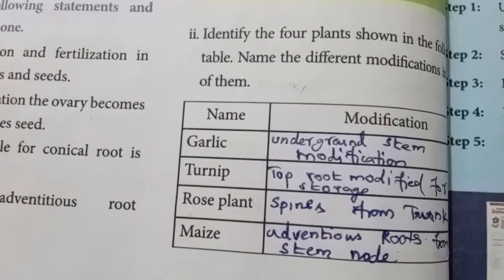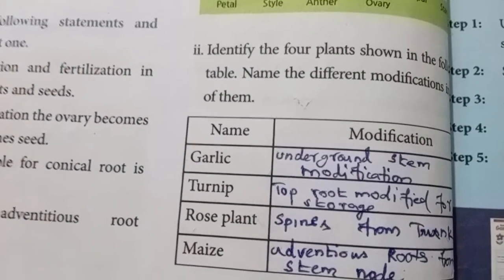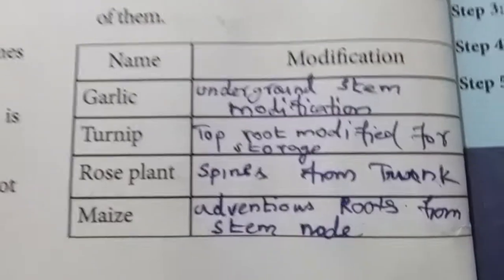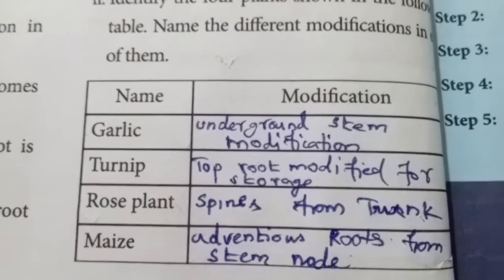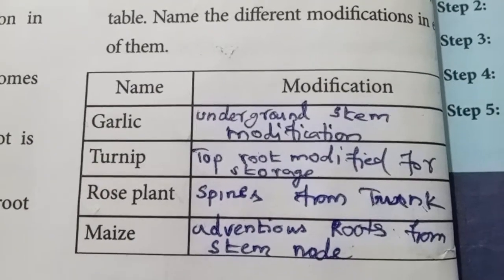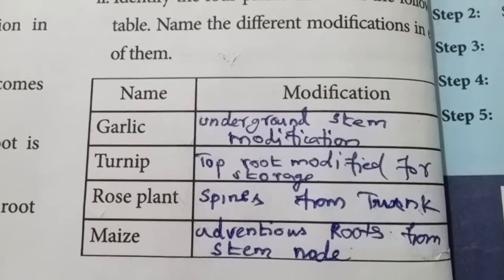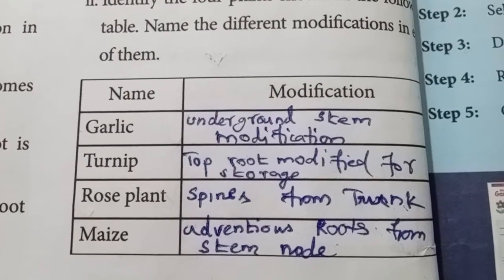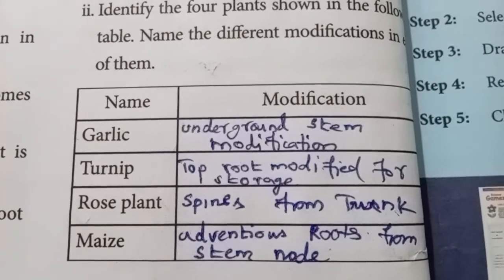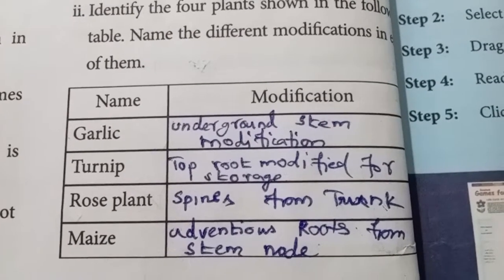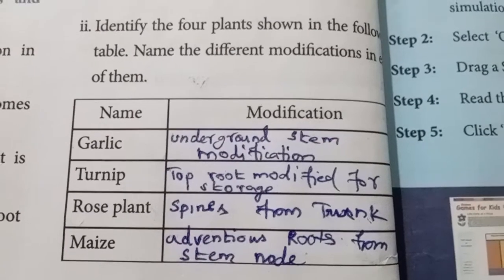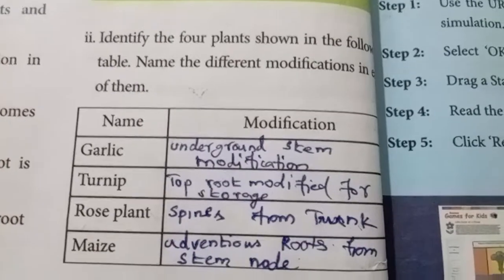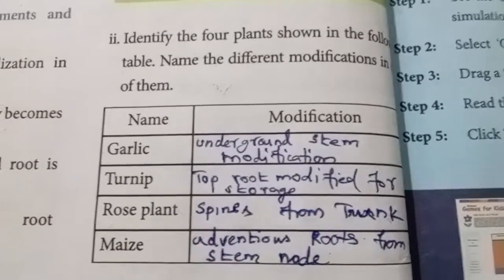Identify the four plants and name the different modifications: Garlic — the underground stem is modified into a bulb (garlic clove). Turnip — taproot modified for storage. Rose plant — spines from the trunk are the modification. Maize — adventitious roots arise from the stem node; another example of adventitious roots from the stem node is sugarcane.